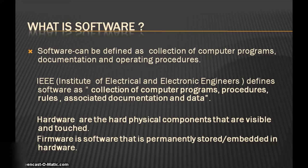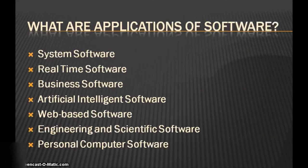In general, software is defined as a set of programs and associated documentation. Hardware refers to the hard physical components that are visible and can be touched. Firmware is software that is permanently stored or embedded in the hardware, for example ROM.